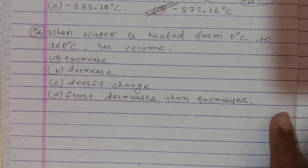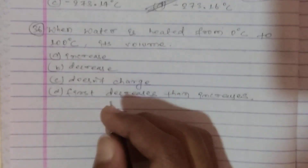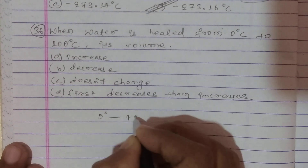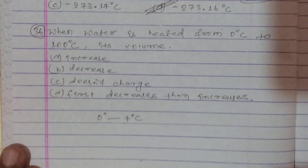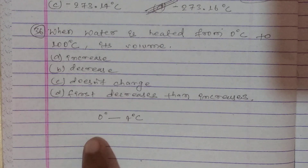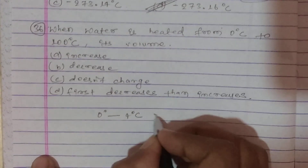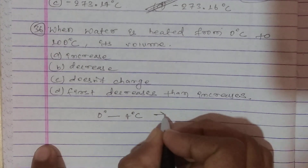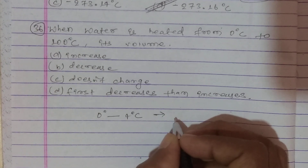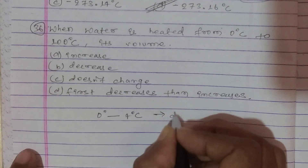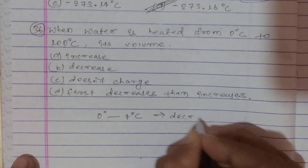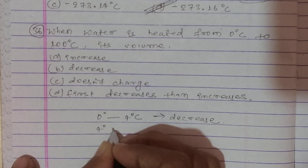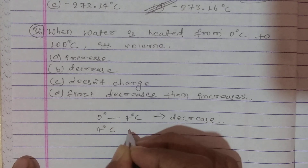From 0 degrees Celsius to 4 degrees Celsius, the volume of water decreases. So in this temperature range, the volume gets smaller.